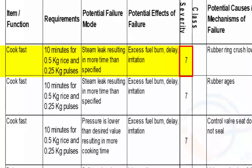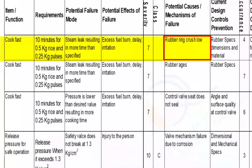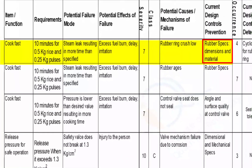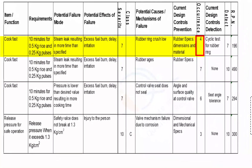The potential cause or mechanism of failure in the first row is that rubber ring crush is low. The current design control prevention includes rubber specifications, dimensions, material, and tolerances. The team rated the occurrence ranking as 4. The current design control detection is cyclic testing for the rubber ring, with a detection ranking of 7. Therefore the RPN is 7 × 4 × 7 = 196.